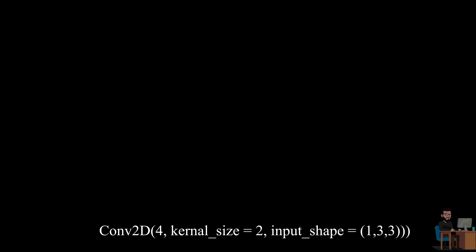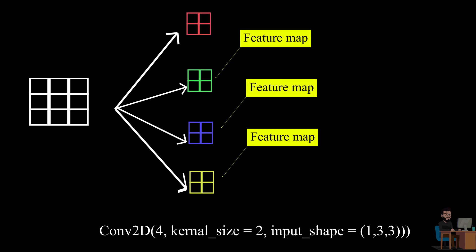This is a simple Keras code to apply convolutional neural network on an image which will generate four different matrices which are called feature maps.